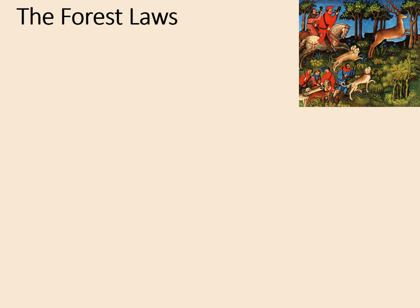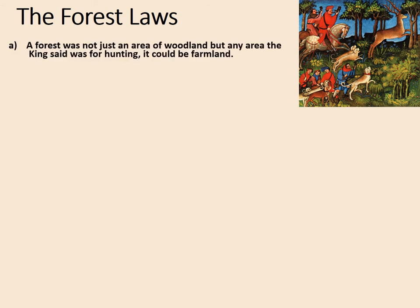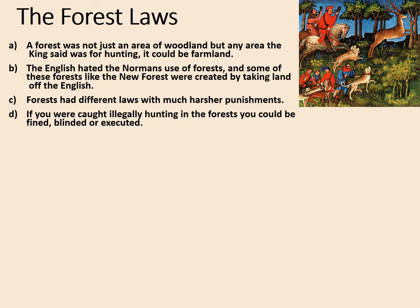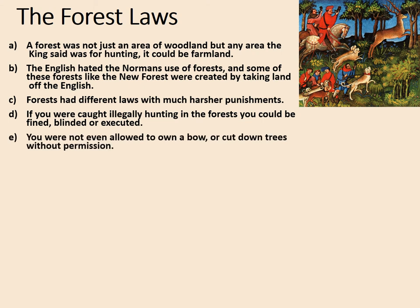One very famous — and very unpopular — way William expressed his power was through the so-called forest laws. A 'forest' was not just woodland but any area the king designated for hunting, which could easily be farmland. The English hated the Normans' use of forests; some, like the New Forest, were created by taking land from the English for hunting purposes. Forests had harsher laws — if caught illegally hunting, you could be fined, blinded, or executed. You were not even allowed to own a bow, cut down trees, or gather firewood without permission. Any fines went straight to the king, increasing his wealth and power.